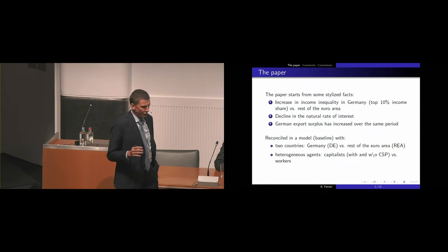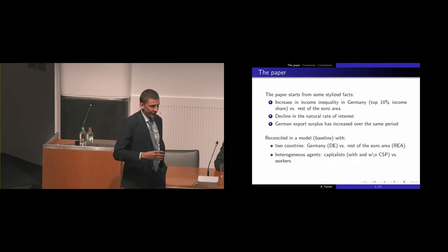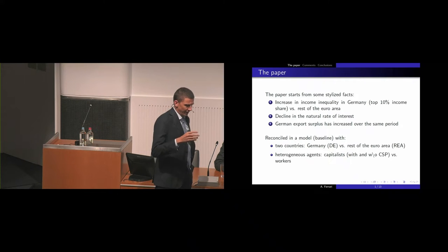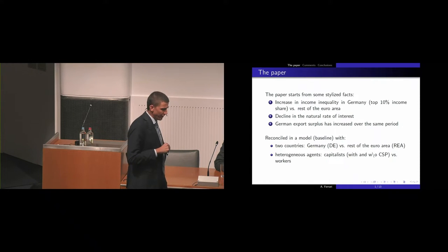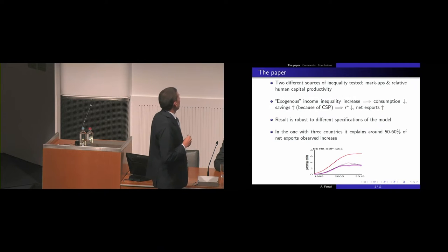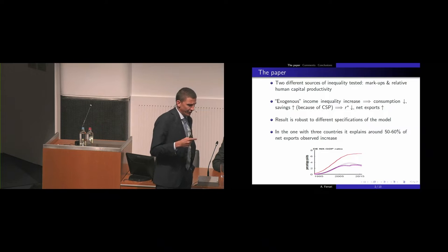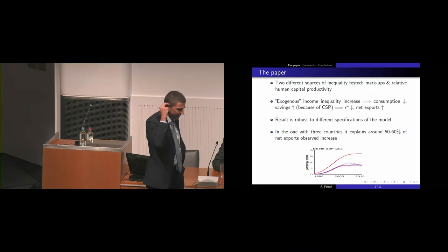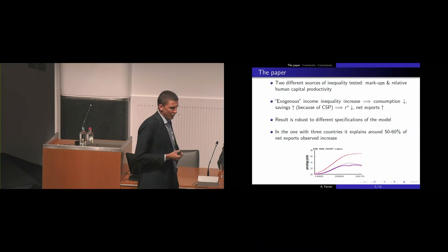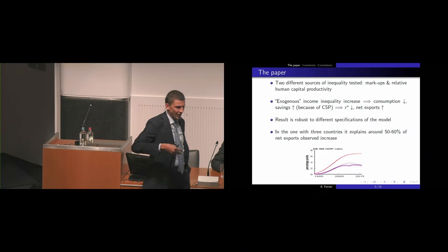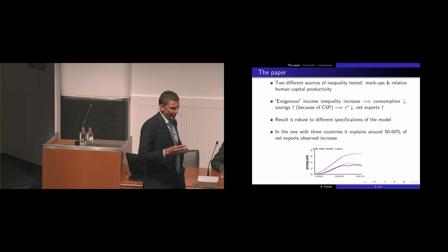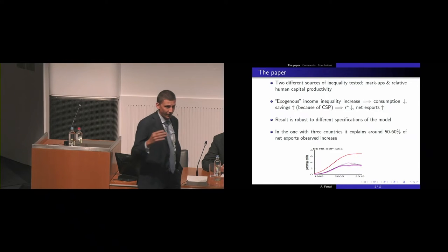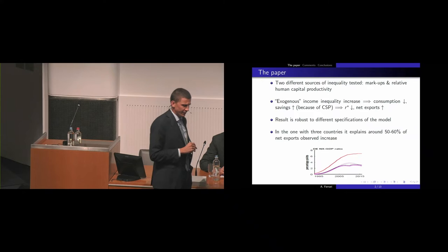The model has two countries in the baseline version — Germany and the rest of the euro area — with heterogeneous agents. The top 10% are sort of capitalists with capitalist spirit preferences, so they have a higher marginal propensity to save, as opposed to the rest of the households and workers. They try different sources of inequality — markups and relative human capital productivity — and find that an exogenous increase in income inequality leads to a fall in consumption in Germany, an increase in savings due to redistribution toward households with a higher preference for saving. This leads to a reduction in the natural rate of interest and an increase in German net exports.